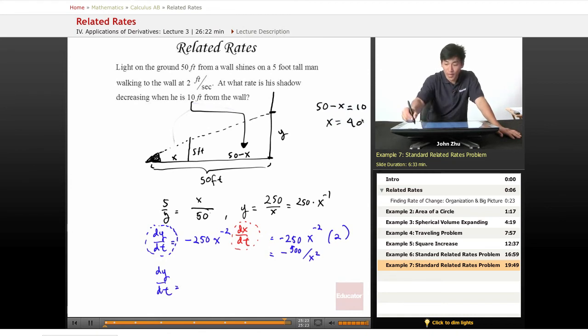So then here we have negative 500 over 40 squared, which means negative 5 over 16 feet per second.